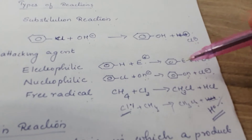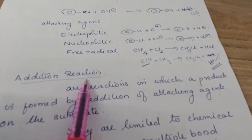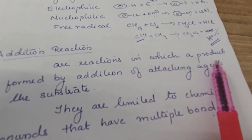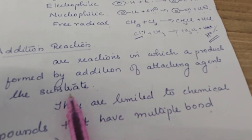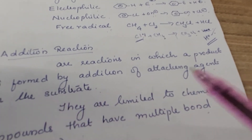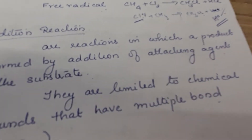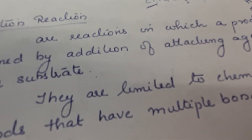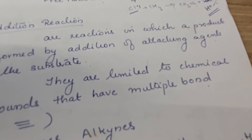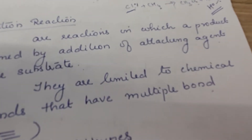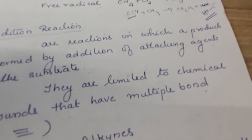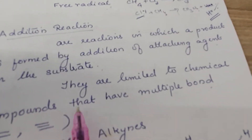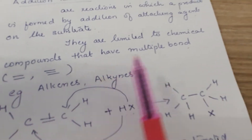Next is addition reaction. Addition reactions are reactions in which a product is formed by the addition of an attacking agent on a substrate. The attacking molecule adds to the substrate molecule. For example, if Harris has 100 rupees and I give him 50 more, he now has 150 — that illustrates addition: a group comes and adds to the molecule.